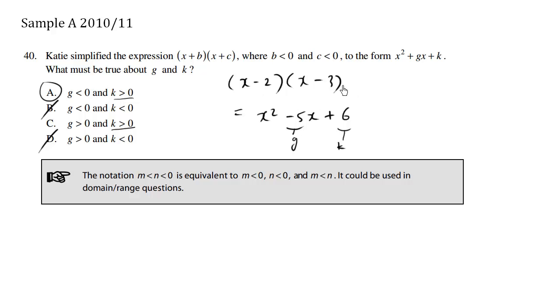And this would be our g value. We can see that for this example where b and c are less than 0, that indeed g is less than 0, is -5 in this concrete example, and the k value is greater than 0.